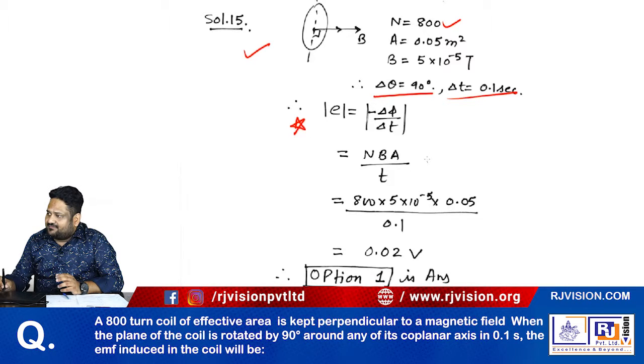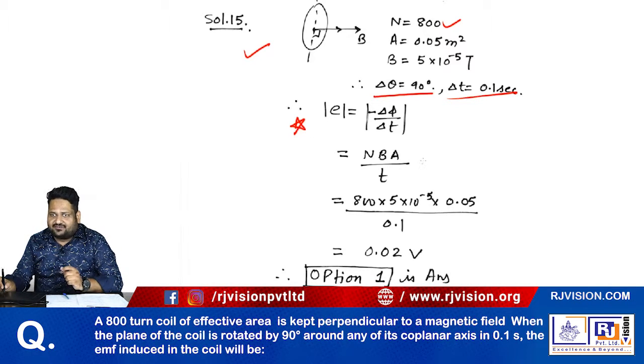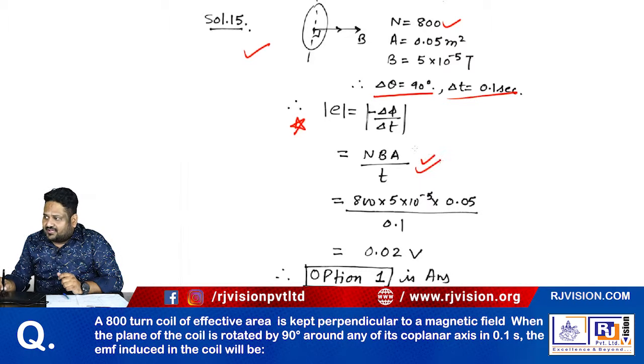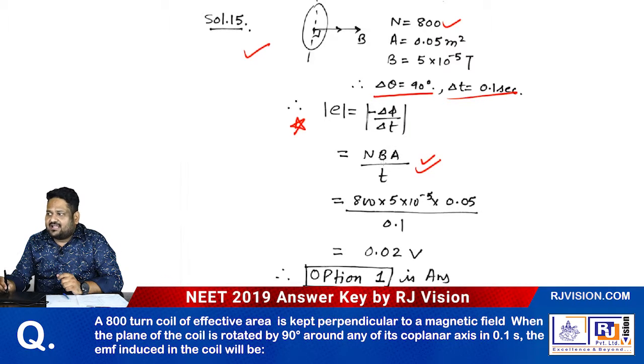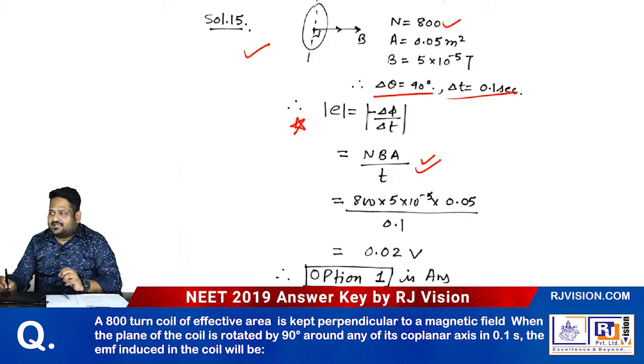Because it's a 90-degree change in angle, we get change in φ divided by ΔT is equal to NBA divided by T. Here N is given, B is given, A is given, and the time is also given. Clear?